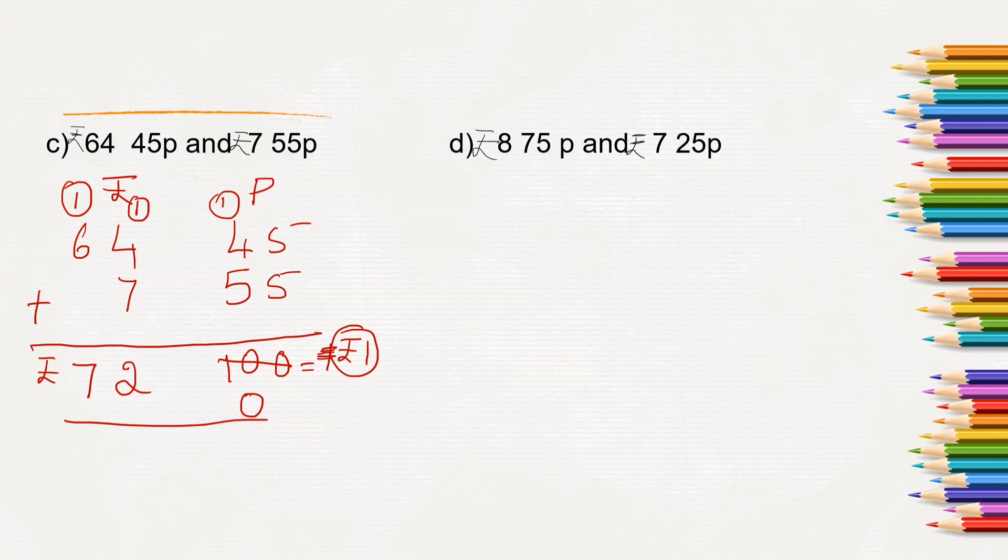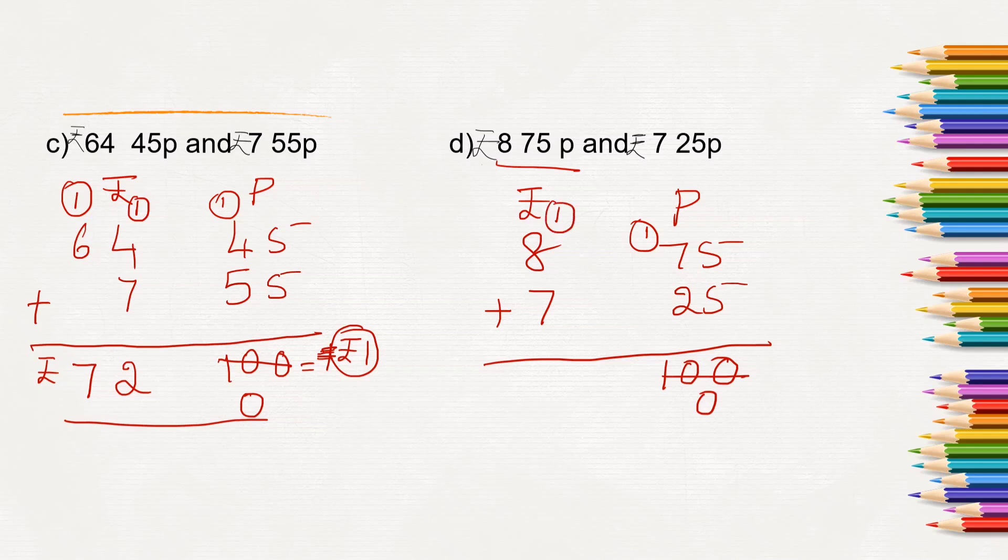Next, again rupees and paise. Here in the first number it is 8 rupees 75 paise and 7 rupees 25 paise needs to be added. 5 plus 5 is 10, so 0, 1 carry. 7 plus 1 is 8, 8 plus 2 is 10 again. It is 100 paise, so 100 paise becomes 1 rupee which we have to carry. Now 7 plus 1 is 8, 8 plus 8 will be 16, so it will be 16 rupees.